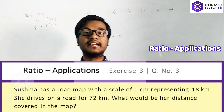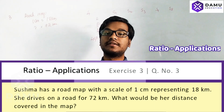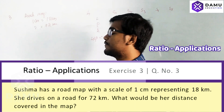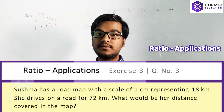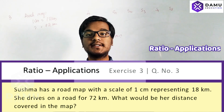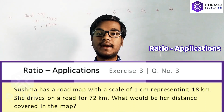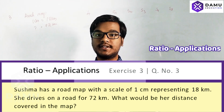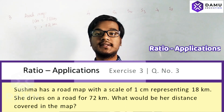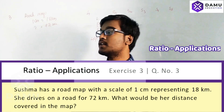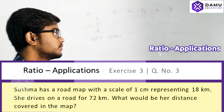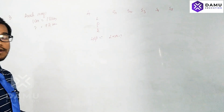Shushma is traveling on a road using a map. The map shows that one centimeter represents 18 kilometers on the road. For 72 kilometers on the road, what is the distance on the map? We will solve this using the proportionate method, also known as the unitary method.